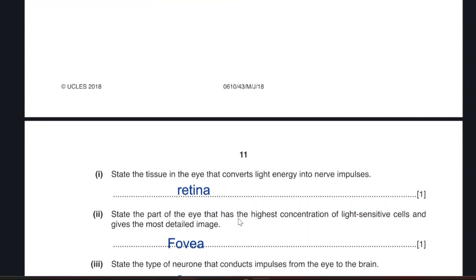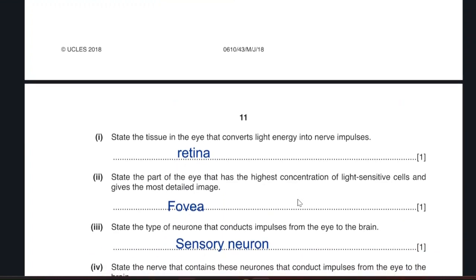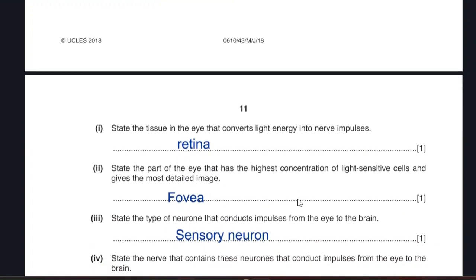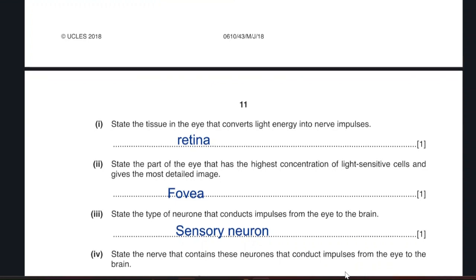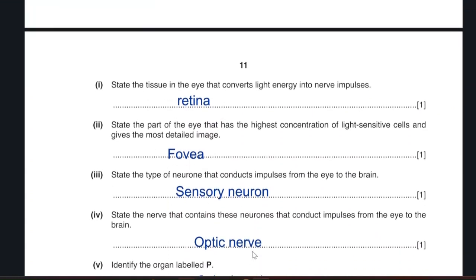What is the type of neuron that conducts impulses from the eye to the brain? Sensory neuron. This is its type. What is the name of this nerve? State the nerve that contains these neurons that conducts the impulses from the eye to the brain. It is the optic nerve. This is the type, sensory. The name is the optic nerve.